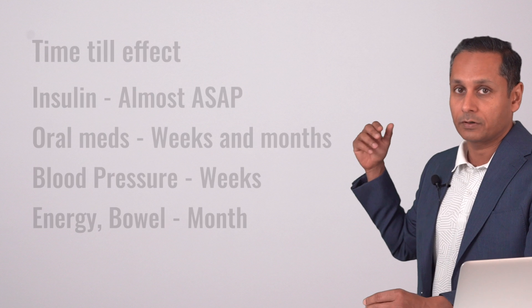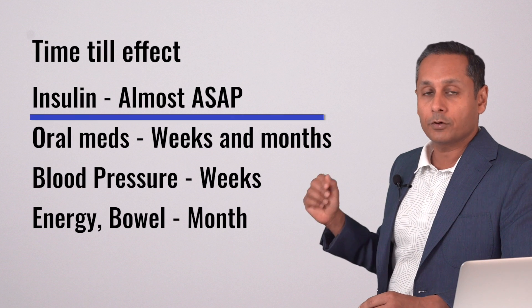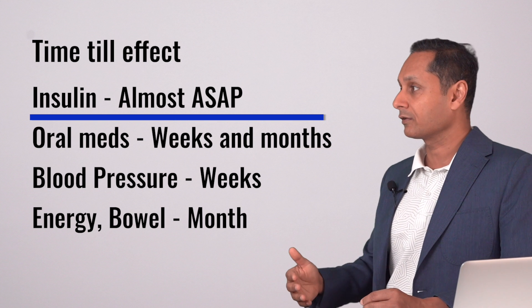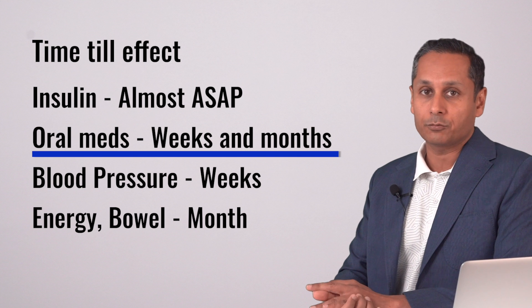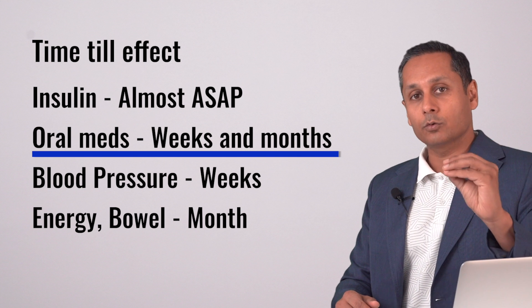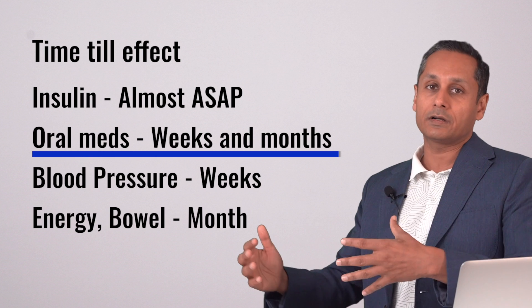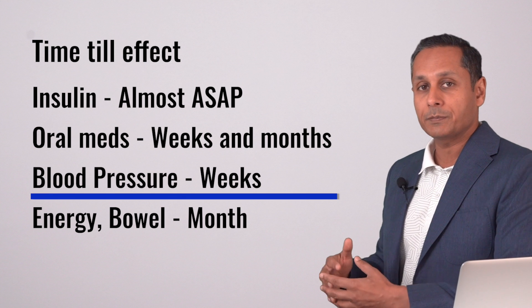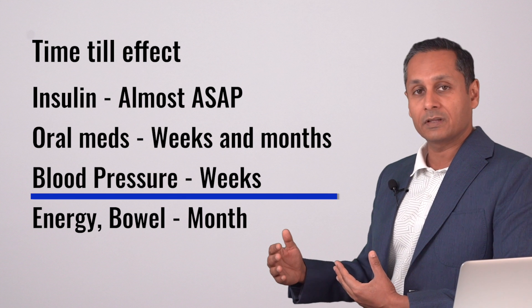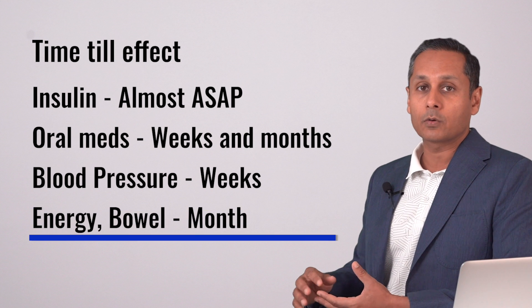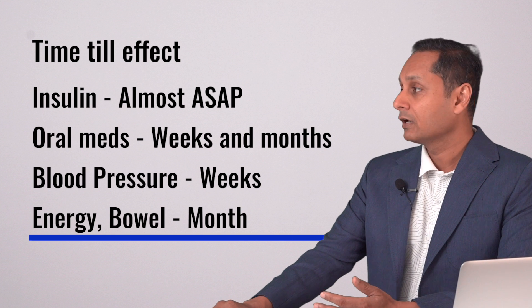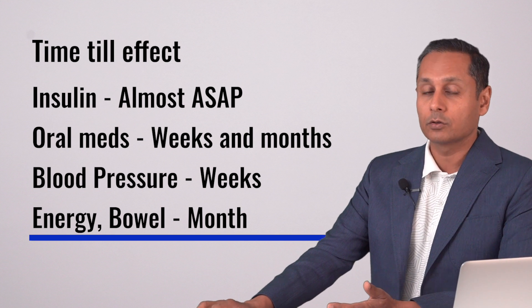Let me explain how powerful these are and how quickly things take effect. If you're on insulin, you will see a difference almost immediately — within 24 to 48 hours. If you are on oral medications, it takes weeks and months; the lower the dose, the longer it takes to get off it, and the higher the dose, the faster the response. Blood pressure will stabilize within some weeks. Energy and bowel movements — many patients have bowel issues — and in about a month you will notice a difference in both.